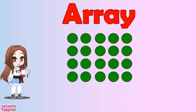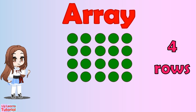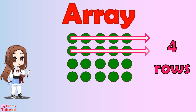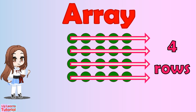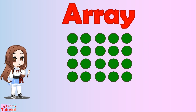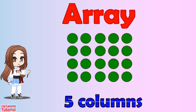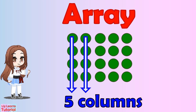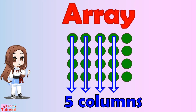This array has four rows — one, two, three, four — and five columns — one, two, three, four, five.